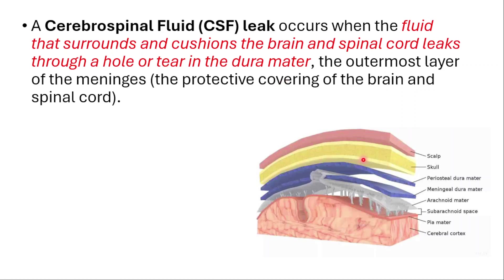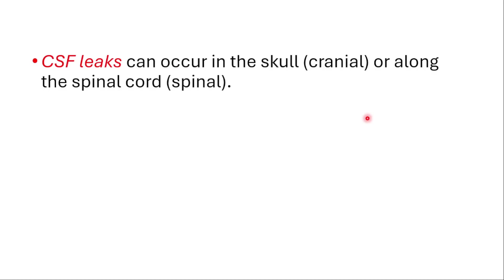Hey everyone, this is Daily Dose of Medicine. Let's talk about CSF leaks. A CSF leak occurs when the fluid that surrounds and cushions the brain and spinal cord leaks through a hole or a tear in the dura mater, which is the outermost layer of the meninges — the protective covering of the brain and spinal cord. After the scalp and skull, we have the dura mater, which protects our brain and spinal cord from trauma.